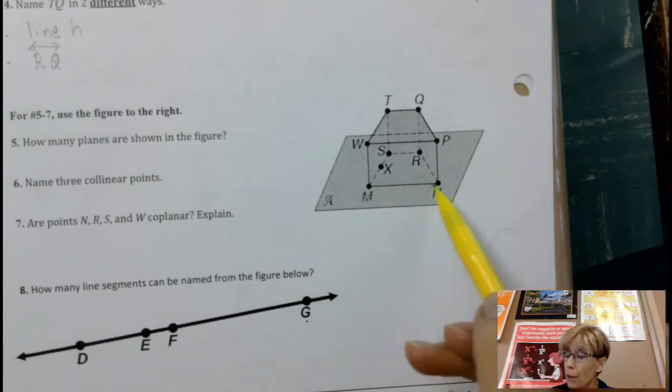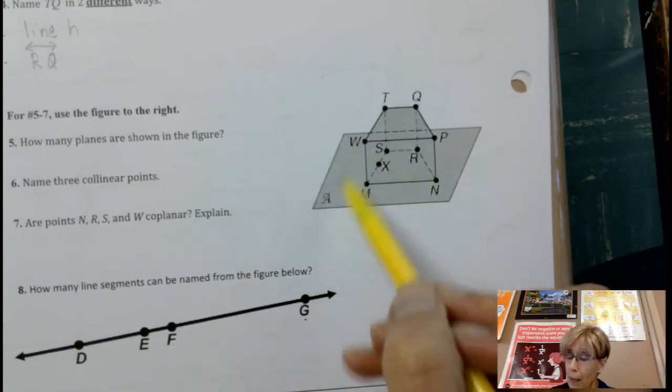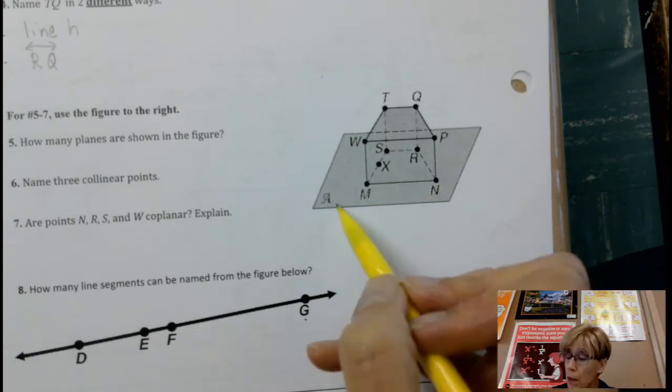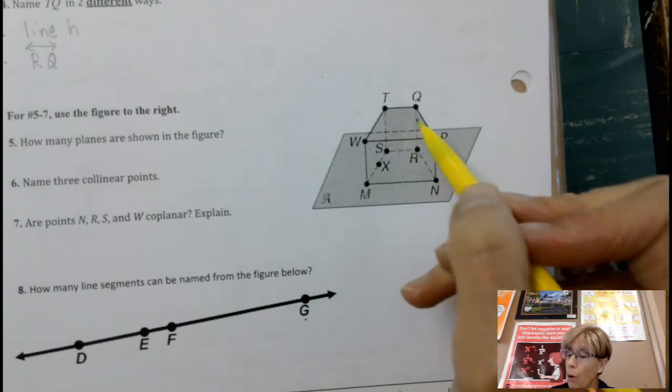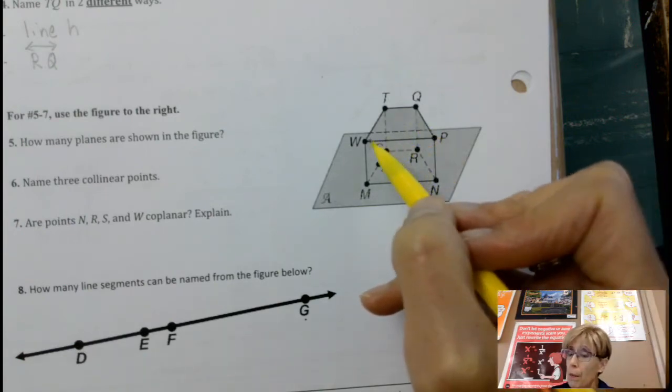If we name three collinear points, it looks like S, X, M - points on the same line.